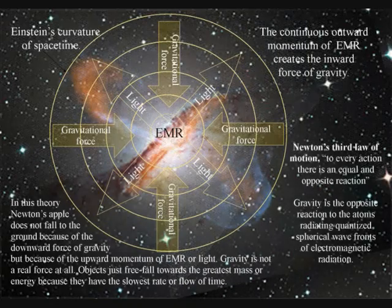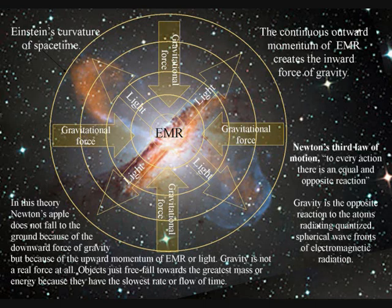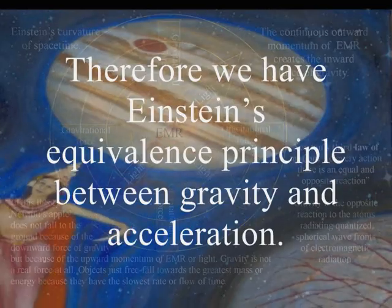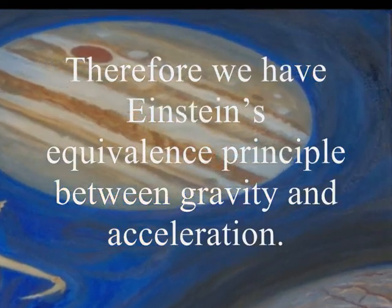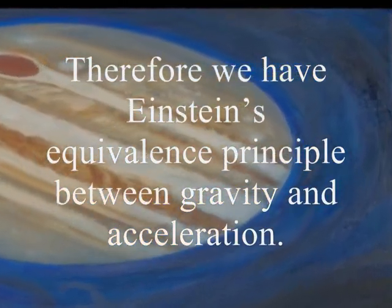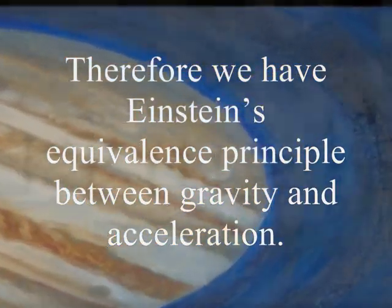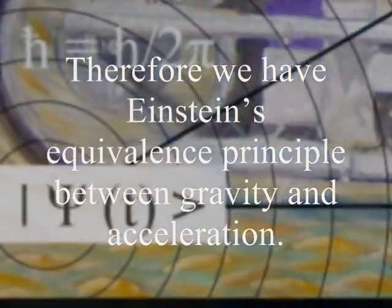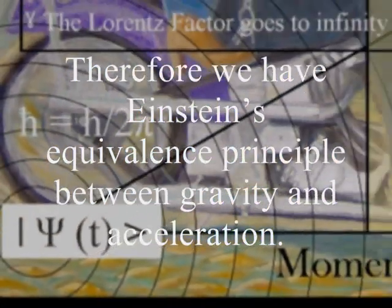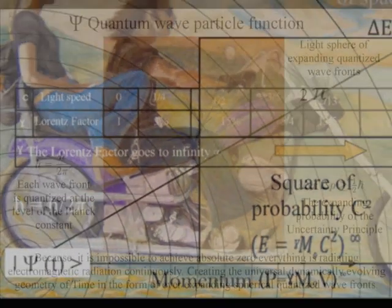In this theory, gravity is a secondary force to the electromagnetic force. Objects simply freefall towards the greatest mass or energy because it has the slowest rate at which time flows.